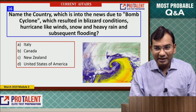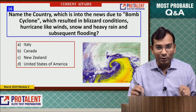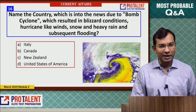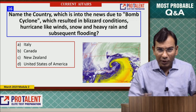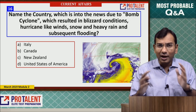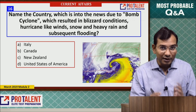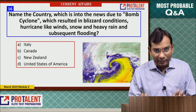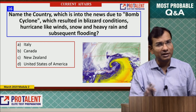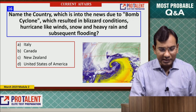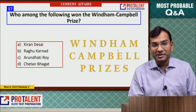Question 16: Name the country in the news due to a bomb cyclone — involving heavy rain, heavy snow, and hurricane-force winds. This typically occurs after winter. The answer is the USA; this time, the bomb cyclone struck the USA.